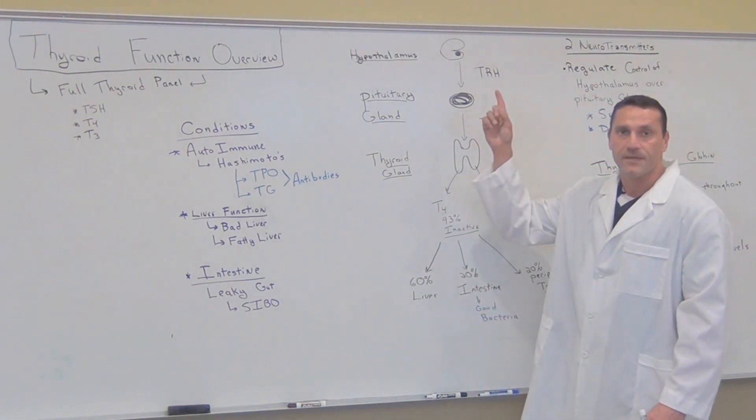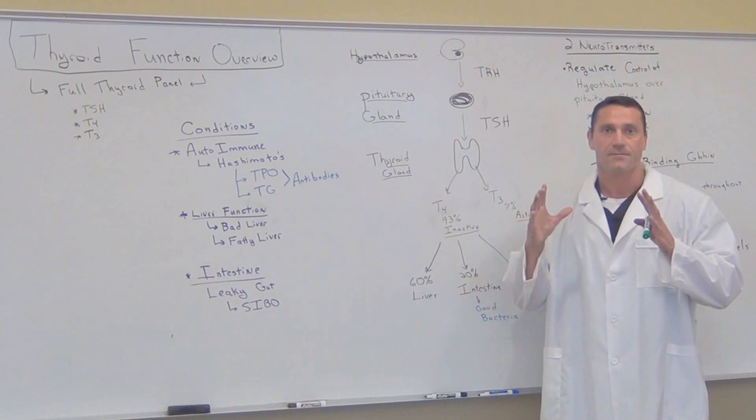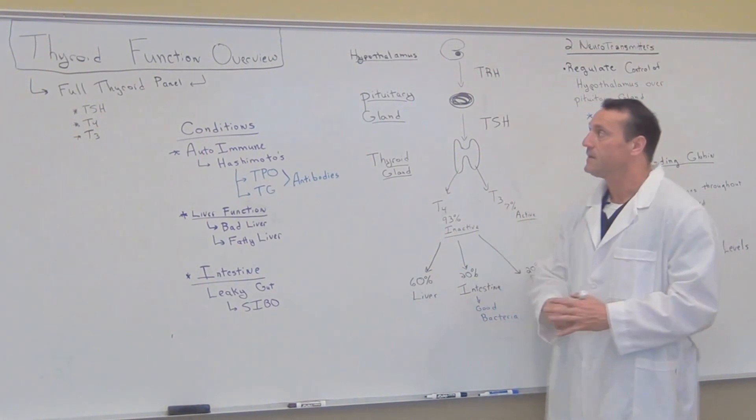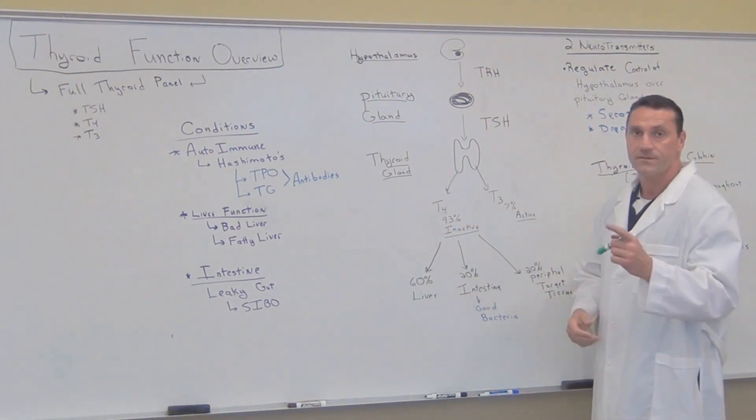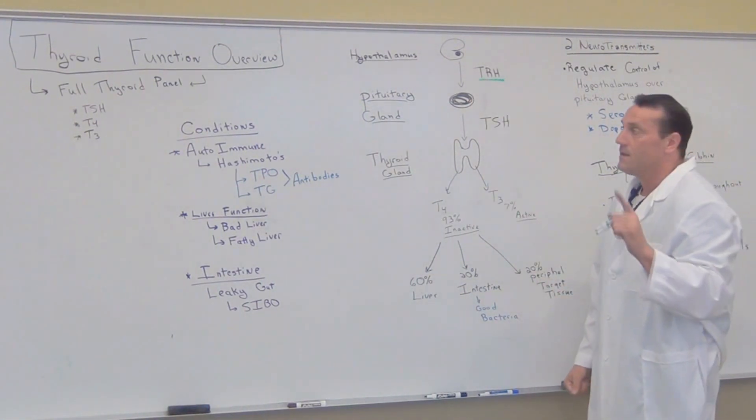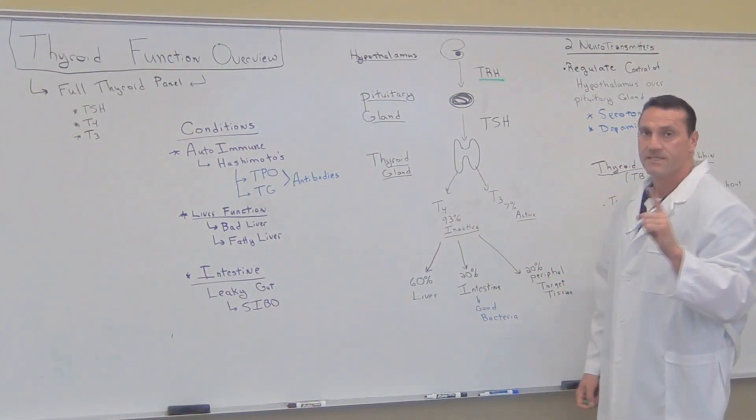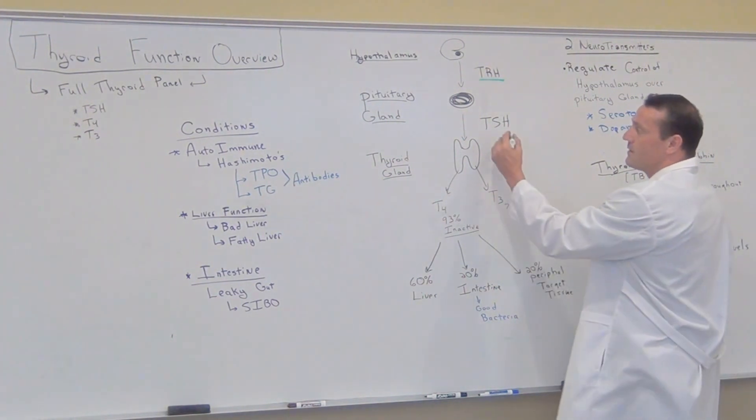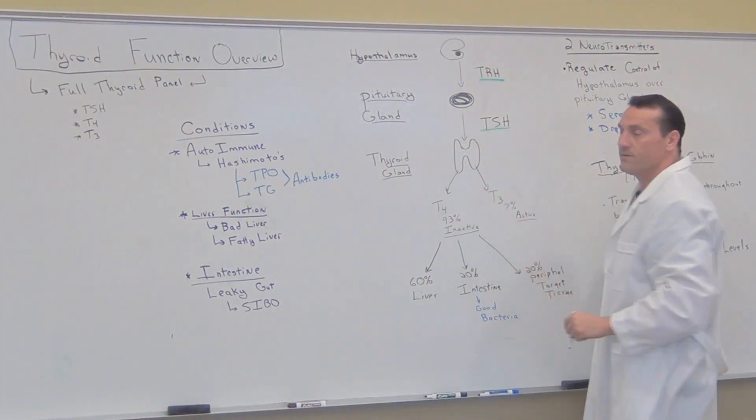So it starts off at the hypothalamus. The hypothalamus is what's considered the master gland. It sends a hormonal signal to the pituitary gland called thyroid releasing hormone. From the thyroid releasing hormone it stimulates the pituitary gland to produce a signal, the thyroid stimulating hormone.